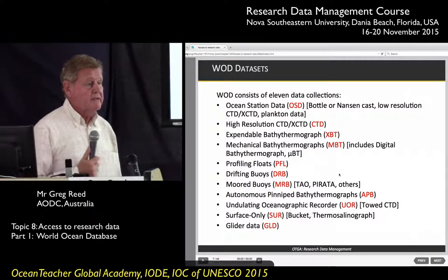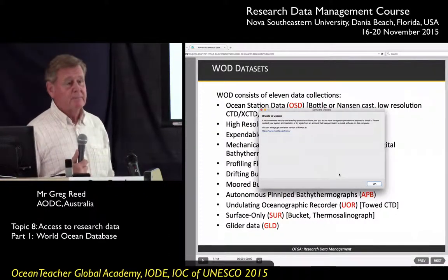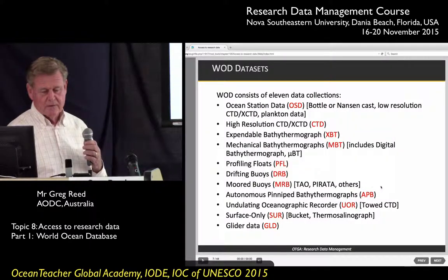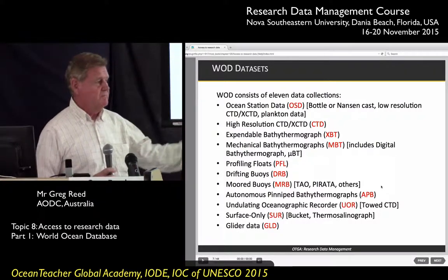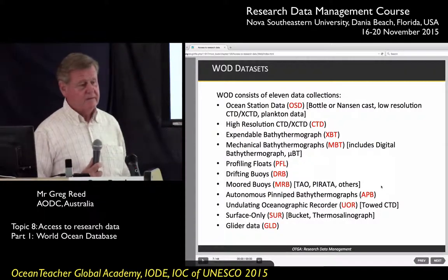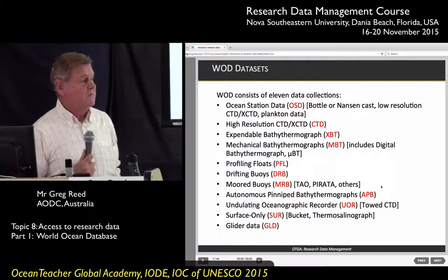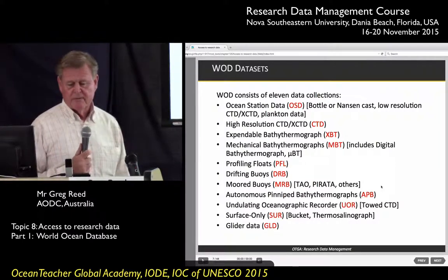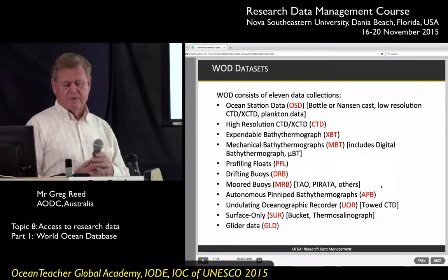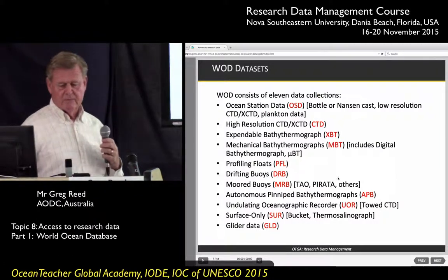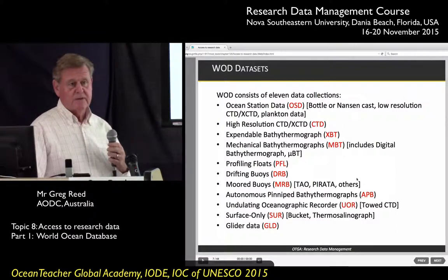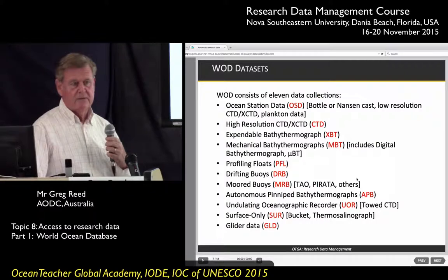Anybody familiar with autonomous pinniped bathythermographs? They're actually instruments placed on mammals such as seals. They measure temperature and salinity as the seals are swimming and diving, and that data is transmitted back to the investigator and made available through the World Ocean Database. There's also glider data and some bucket data — all these different collections are available through the World Ocean Database.